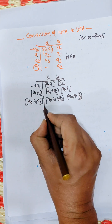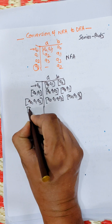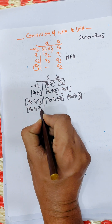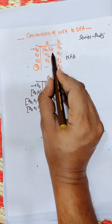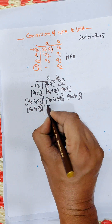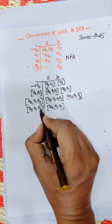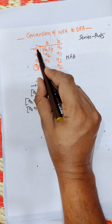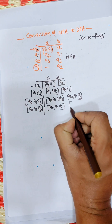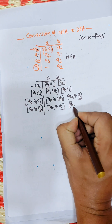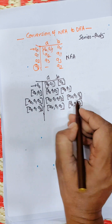There are two new states: Q0Q1Q2Q3 and Q0Q1Q3. From Q0Q1Q3 on input a: Q0 gives Q0Q1, Q1 gives Q2, Q3 gives empty. The union is Q0Q1Q2. From Q0Q1Q3 on input b: Q0Q1Q2, which is already available as a present state.